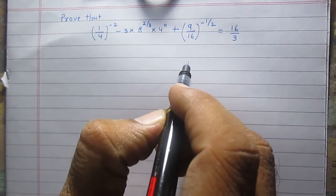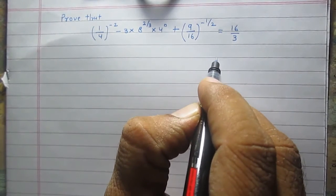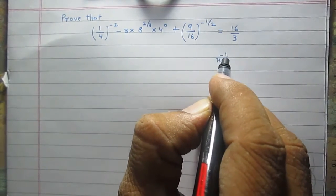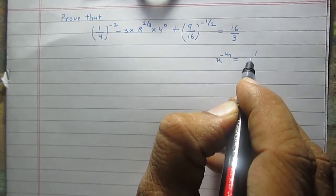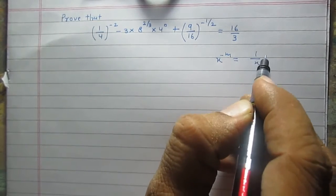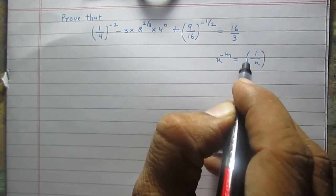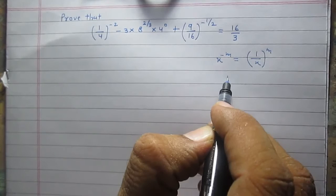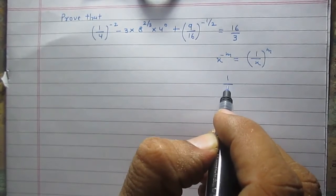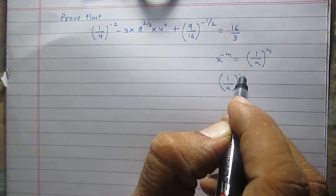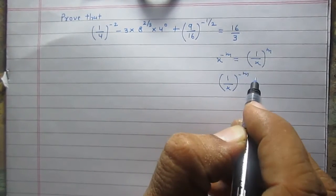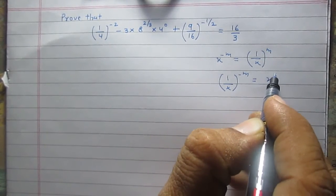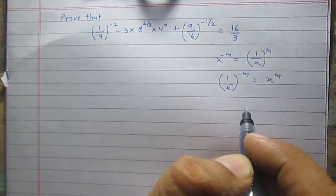According to the laws of exponents, x raised to the power minus m is equal to 1 upon x raised to the power m. Similarly, 1 upon x raised to the power minus m is equal to x raised to the power m.